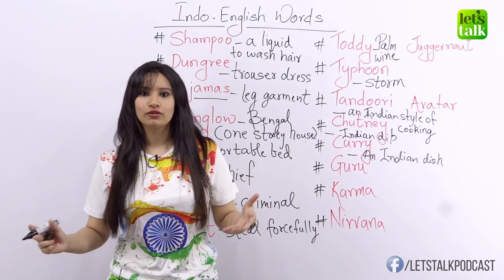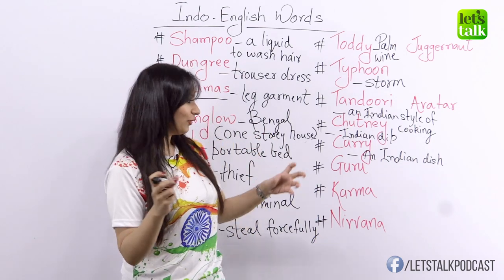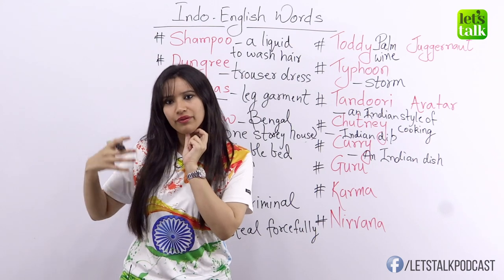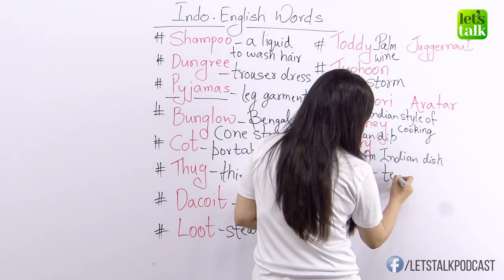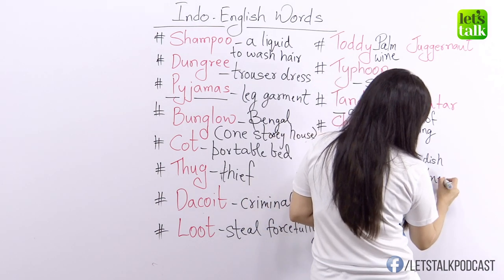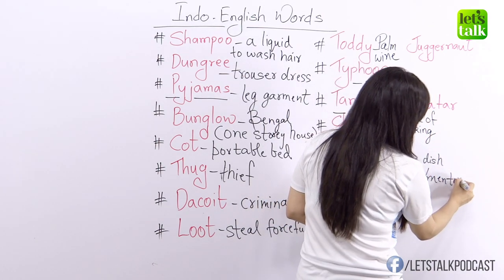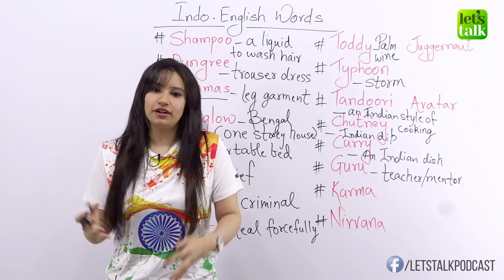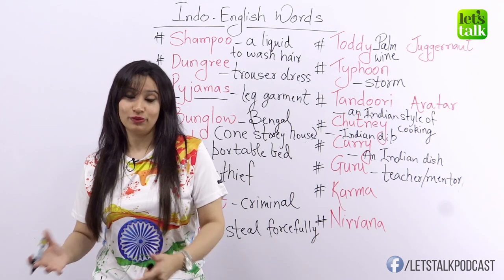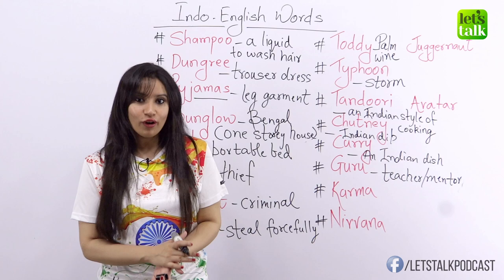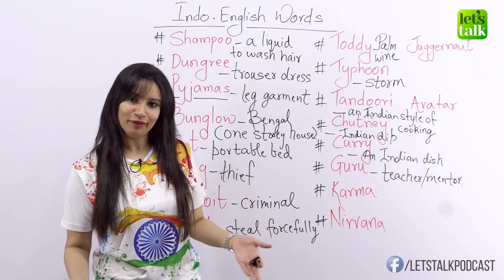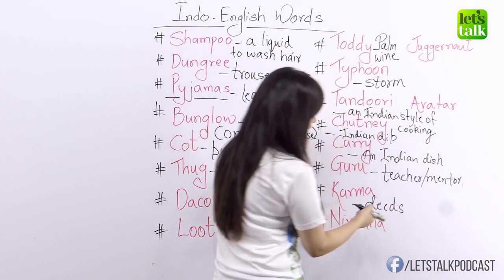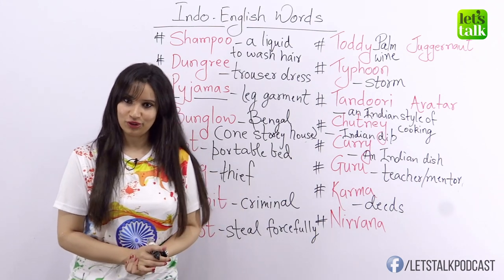Now we look at some words from the Hindu religion. The first word is guru. Guru means someone who is a teacher, and you often call someone your guru if they teach you or are your mentor. You can use it in English to say 'you're my guru.' The next word is karma. Karma means the deeds that a person does — a person's deeds affect their future. So if John is having bad luck, karma is paying back on him. This is a common Hindu belief that your karma, your deeds, affect your future.